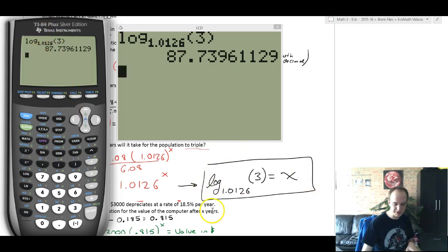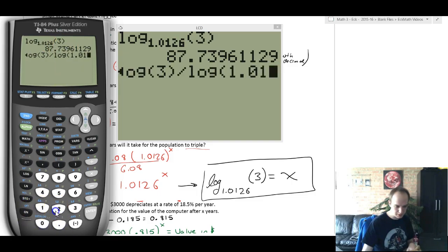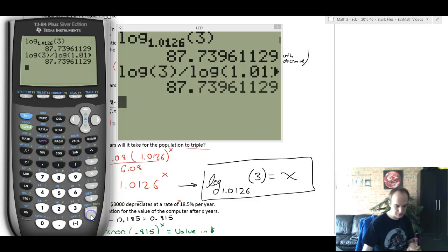If we want to do this expression without the fancy feature, again, you're going to do log of the big number on top, and then divide by log of the base number, 1.0126. And hit enter. And again, we get the same number.